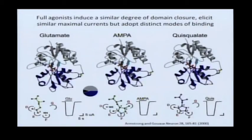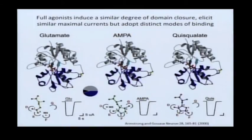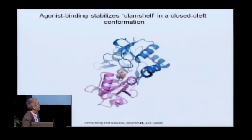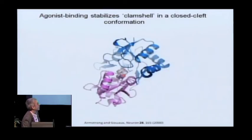By contrast, agonists such as glutamate, AMPA, and quisqualate close the clamshell. They bind in the same region of the receptor fragment, thus explaining the competitive antagonism of DNQX, and they give rise to the same level of receptor activation as measured under conditions where we've blocked desensitization. So even though these agonists have different structures, the common principle of activation at the level of this individual fragment is that agonists promote domain closure — they close the clamshell.